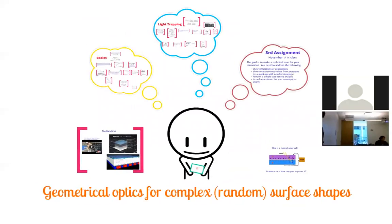What we want to do is somehow change the material to absorb more light, which means we want to create complex shapes and complex surfaces. We need to understand the optics of complex surfaces. Because our main goal is on geometrical optics, we will look at the geometrical optics of complex or random surfaces — a field called statistical optics.